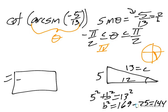Now we have the angle in the fourth quadrant. Cotangent is the reciprocal of tangent, which is adjacent over opposite — so we flip it: 12 over 5. But since we're in the fourth quadrant, the answer is negative 12 over 5.